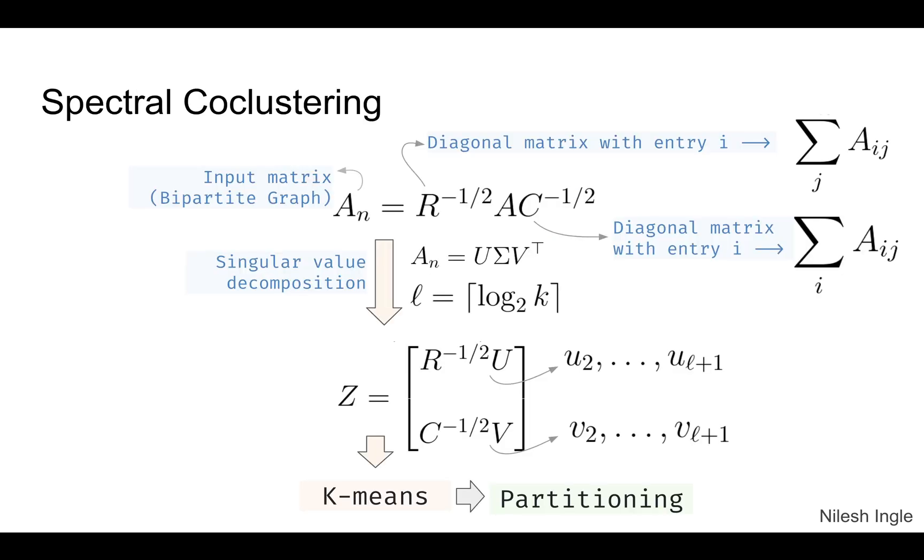In spectral co-clustering, the bipartite graph is used as an input matrix An, which is calculated based on these relations. R is a diagonal matrix found by the matrix A as shown here, and C is another diagonal matrix with entry i as shown here. This input matrix is decomposed by performing singular value decomposition to get a final matrix Z, which can then be used to perform clustering using k-means and partitioning the graph. This is just to give you a brief overview: the input matrix is taken, singular value decomposition is performed, and then on that output they're performing k-means to do the partitioning.